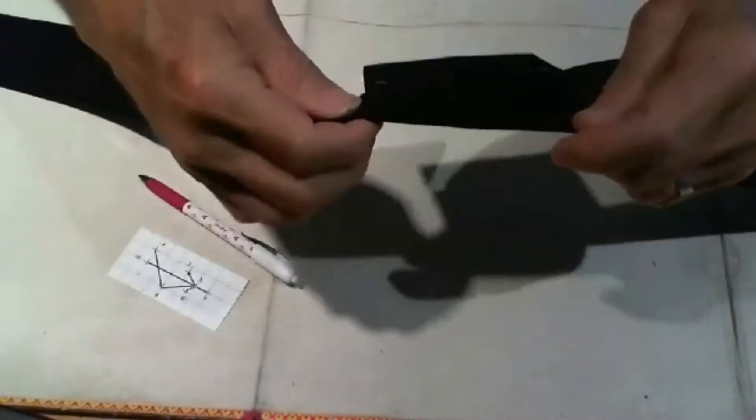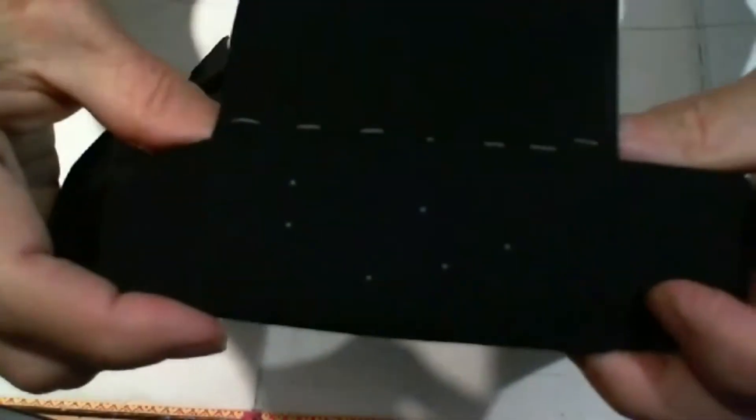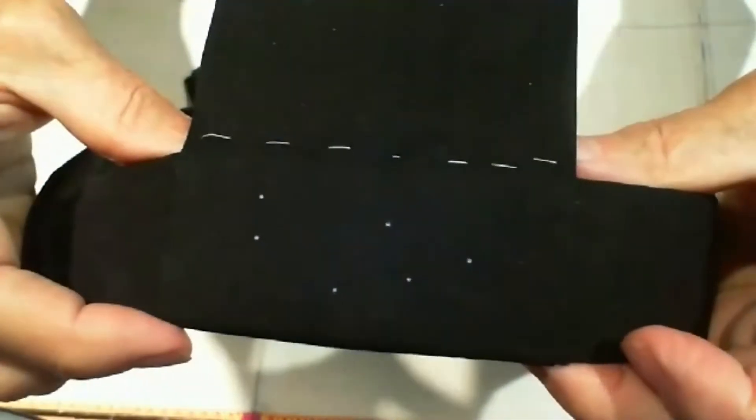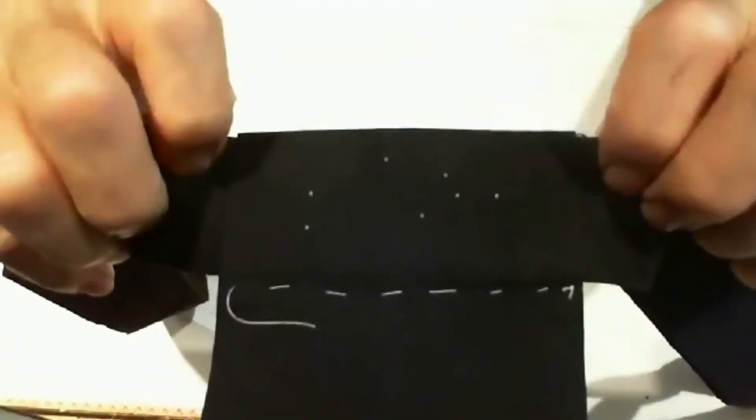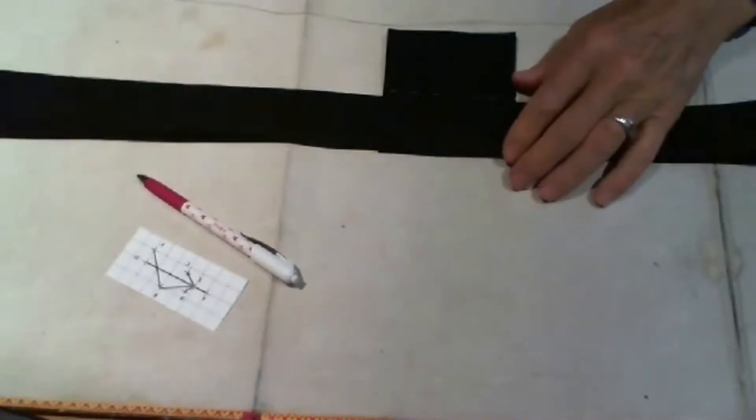We end up with markings on both sides so that when we go through with a needle, we can come out in the correct place.